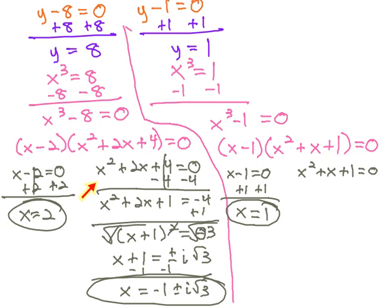The second factor, we were able to solve it by completing the square to give us two more solutions, x equals negative 1 plus i root 3, and x equals negative 1 minus i root 3.